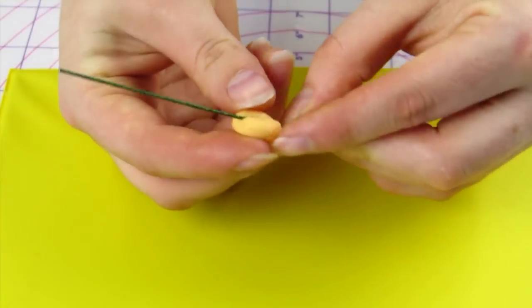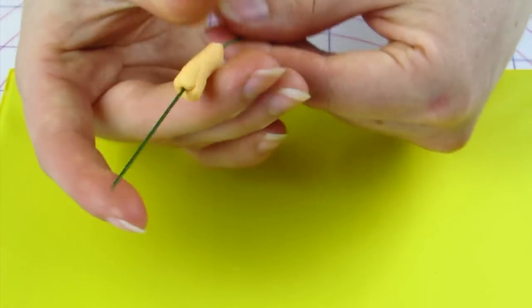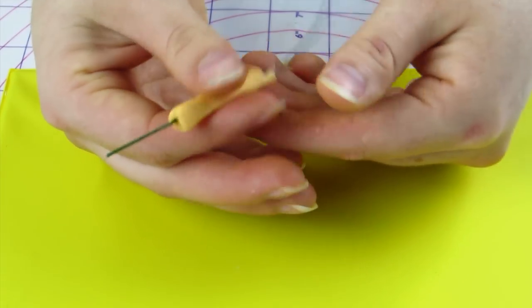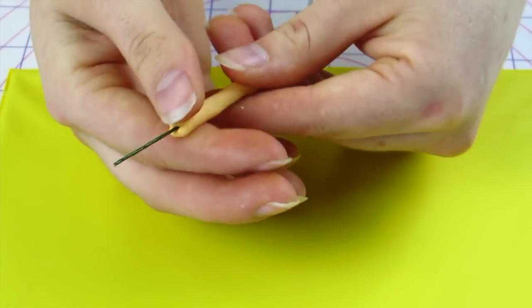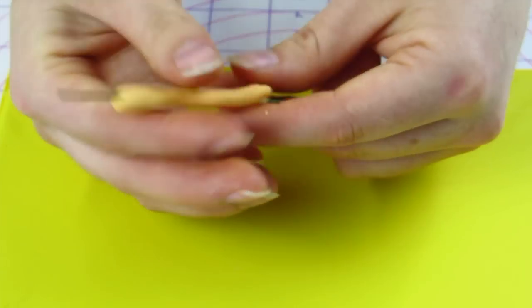Now I'm taking a 20 gauge wire and this is going to be for my pistil. I'm taking a small ball of orange gum paste and I'm really just pinching it in between my fingers and rolling it at the same time and that's going to work my gum paste up to the tip of the wire.